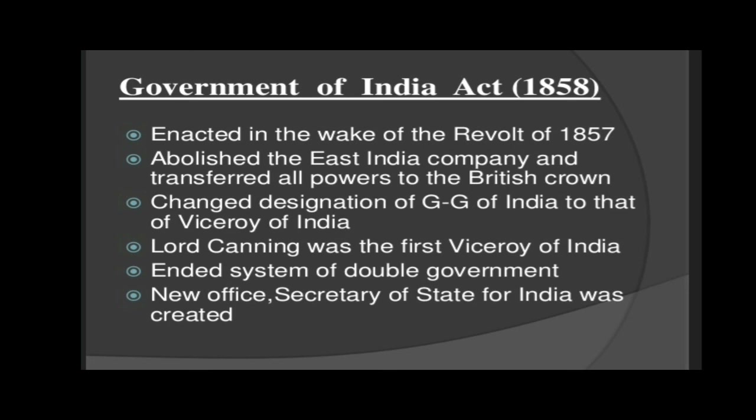Government of India Act, 1858: It was enacted in the wake of the revolt of 1857. It abolished the East India Company and transferred all powers to the British Crown. It changed the designation of Governor General of India to that of Viceroy of India. Lord Canning was the first Viceroy of India. It ended the system of double government, and a new office — Secretary of State for India — was created.